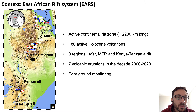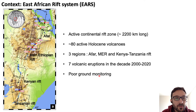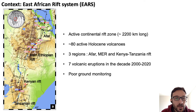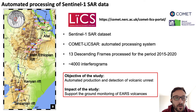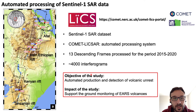The context of the East African Rift: it's an active continental rift zone with 80 active volcanoes in three regions — Afar, Main Ethiopian Rift, and Kenya-Tanzania Rift. The area has poor ground monitoring, and the objective of this study is to use InSAR data to automatically produce time series and detection of volcanic unrest to support ground monitoring of these volcanoes.